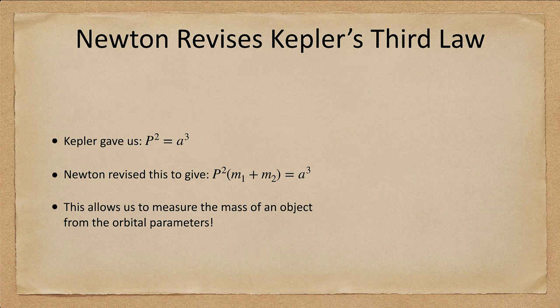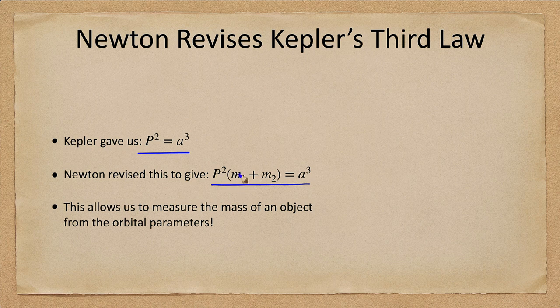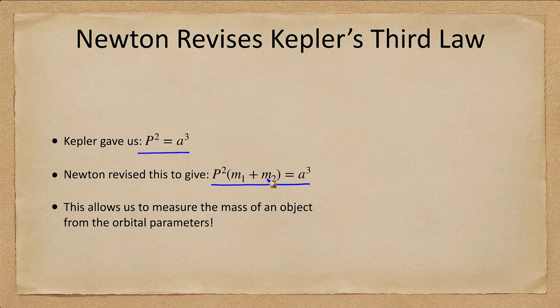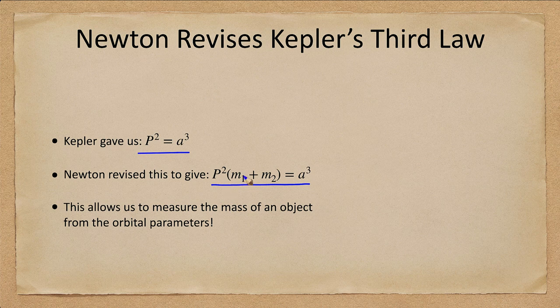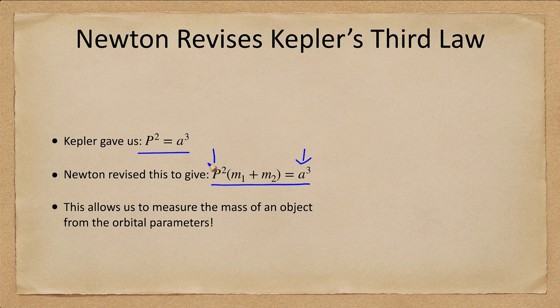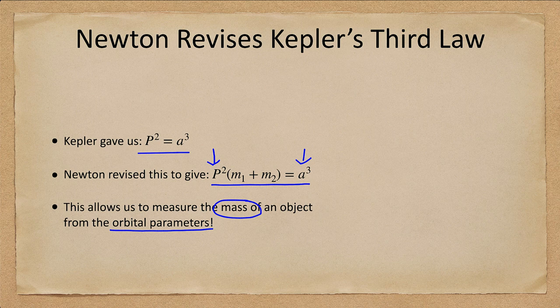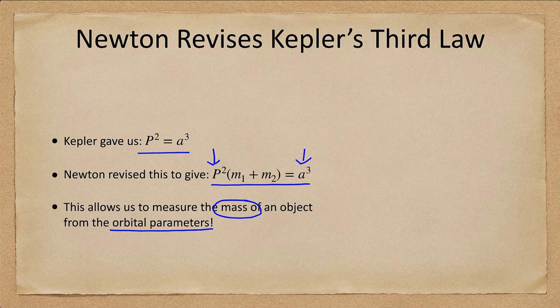Now what does this apply for Kepler's third law? Remember Kepler gave us p squared equals a cubed. Newton revised this in a simplified version to give us p squared times (m1 plus m2) equals a cubed. So m1 is the mass of one object, m2 is the mass of the other object. What this means now is that we can determine the mass of a system by measuring its semi-major axis, the average distance between the two, and the orbital period of the system. So if we determine the orbital period we can determine the mass. We're going to find this very useful for determining masses of stars and galaxies.